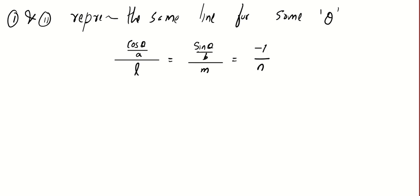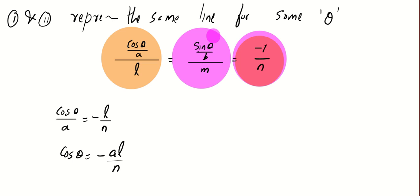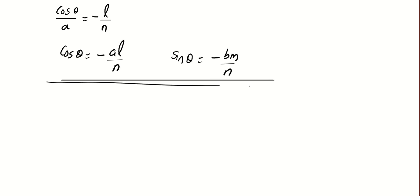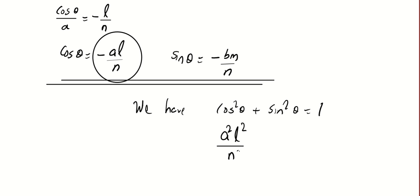From the first and last ratios: cosθ/a = −l/n, so cosθ = −al/n. From the second and last: sinθ = −bm/n. To eliminate theta, use cos²θ + sin²θ = 1, giving a²l²/n² + b²m²/n² = 1, which is the required condition.